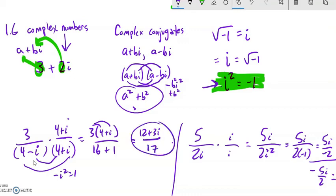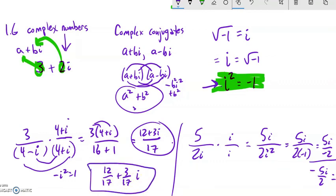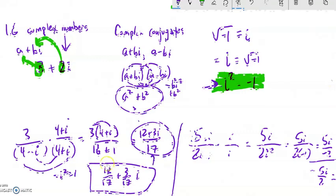You can leave your answer like that — as 12 plus 3i over 17. You might see it written in the textbook as 12/17 plus (3/17)i, which is the a plus bi form. There's really not much computational advantage to doing it that way.